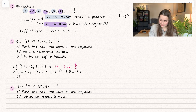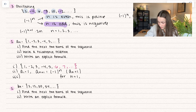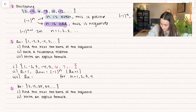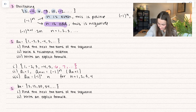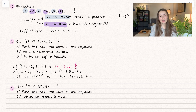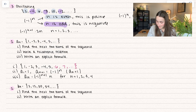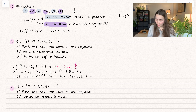Finally, we're going to write out an explicit formula. For explicit formulas, we have n equal to 1, 2, 3, 4 — and that describes our counting number, so a sub n is equal to n. But now we need the alternating positive and negative, so we're going to have negative 1 raised to some power. If we start with n and set n equal to 1, we get negative 1, but that is not our first term — our first term is positive 1. So we need to adjust: if I raise it to n plus 1, I plug in 1 and I get 2. When it's raised to an even power, it's going to be positive. So our explicit formula is negative 1 to the n plus 1 times n.